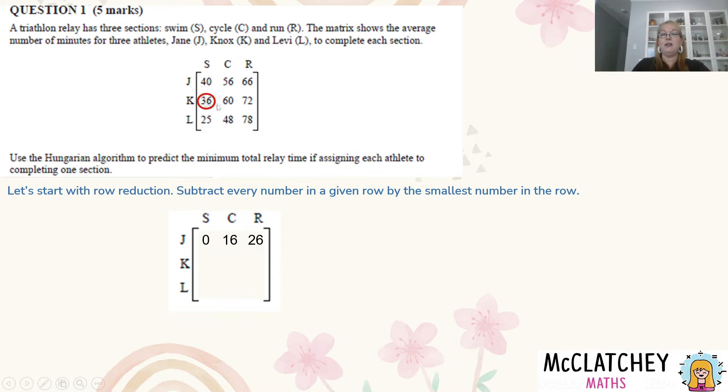I'm going to jump down to this one now. 36 is the smallest number in this row for Knox. So 36 take away 36 is 0, 60 take away 36 is 24, and 72 take away 36 is also 36.